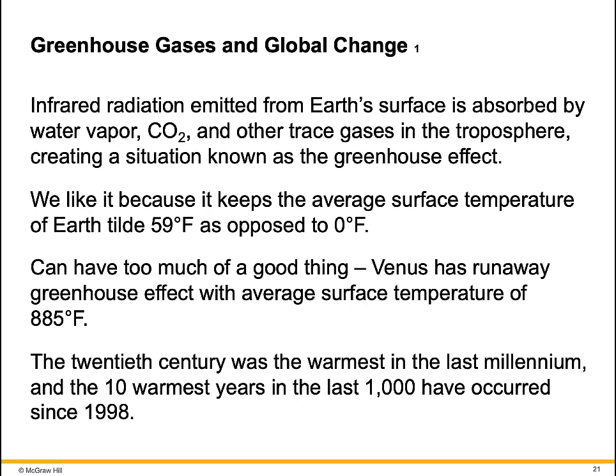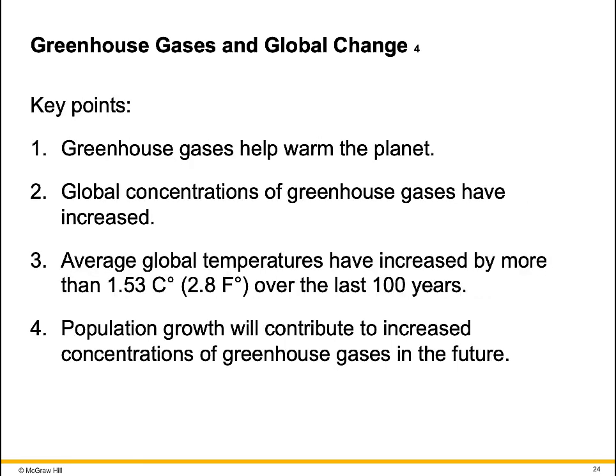Infrared radiation emitted from Earth's surface is absorbed by water, CO2, and other trace gases in the troposphere, creating a situation known as the greenhouse effect. We like it because it keeps the average surface temperature of Earth at 59 degrees Fahrenheit, as opposed to 0 degrees Fahrenheit. However, we can have too much of a good thing — Venus has a runaway greenhouse effect with an average surface temperature of 885 degrees Fahrenheit. The 20th century was the warmest in the last millennium, and the 10 warmest years in the last 1,000 have occurred since 1998.